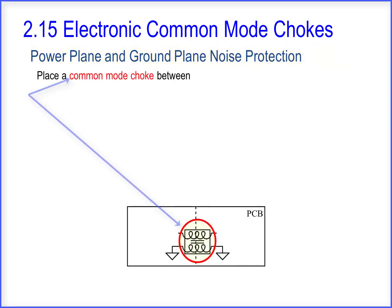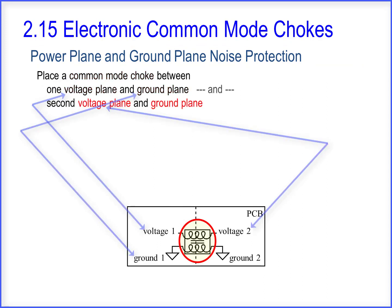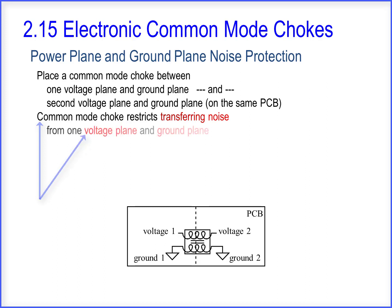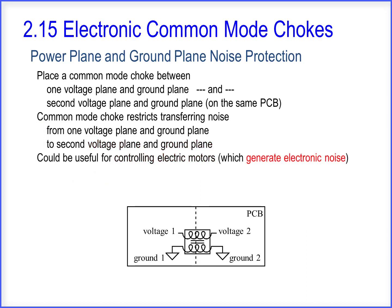Place a common mode choke between one voltage plane and ground plane, and a second voltage plane and ground plane, on the same PCB. The common mode choke restricts transferring noise from one voltage plane and ground plane to a second voltage plane and ground plane. This could be useful for controlling electric motors, which generate electronic noise. Voltage planes and ground planes are clarified in another video clip.